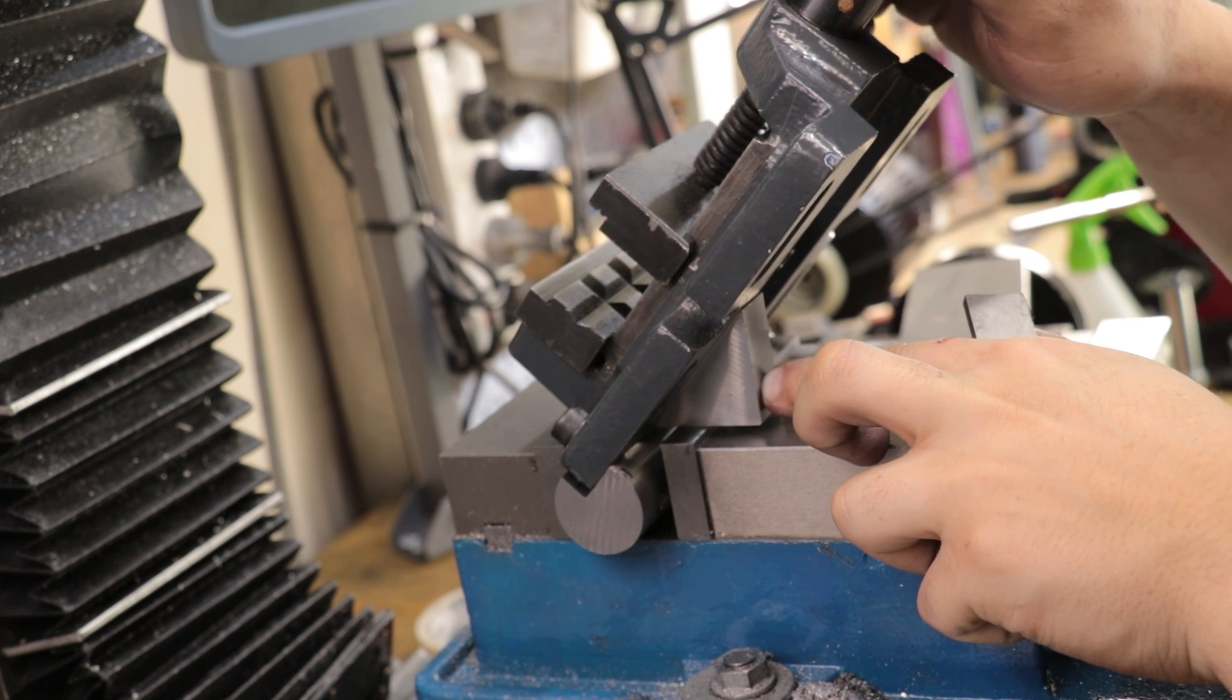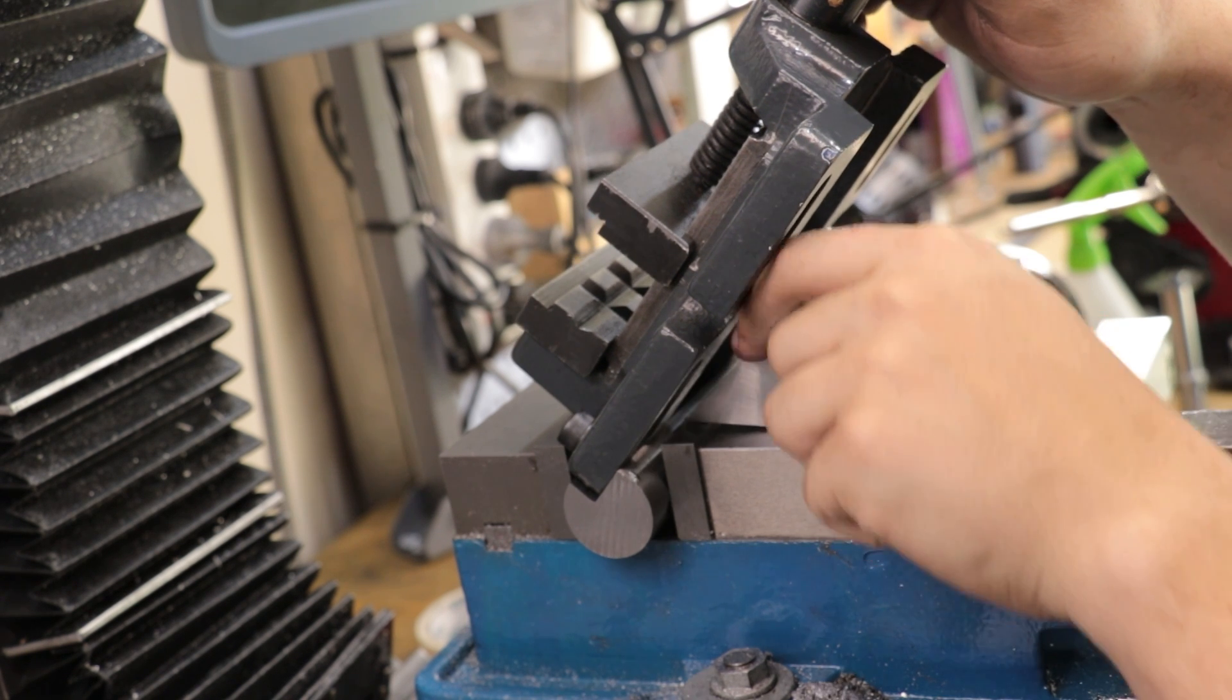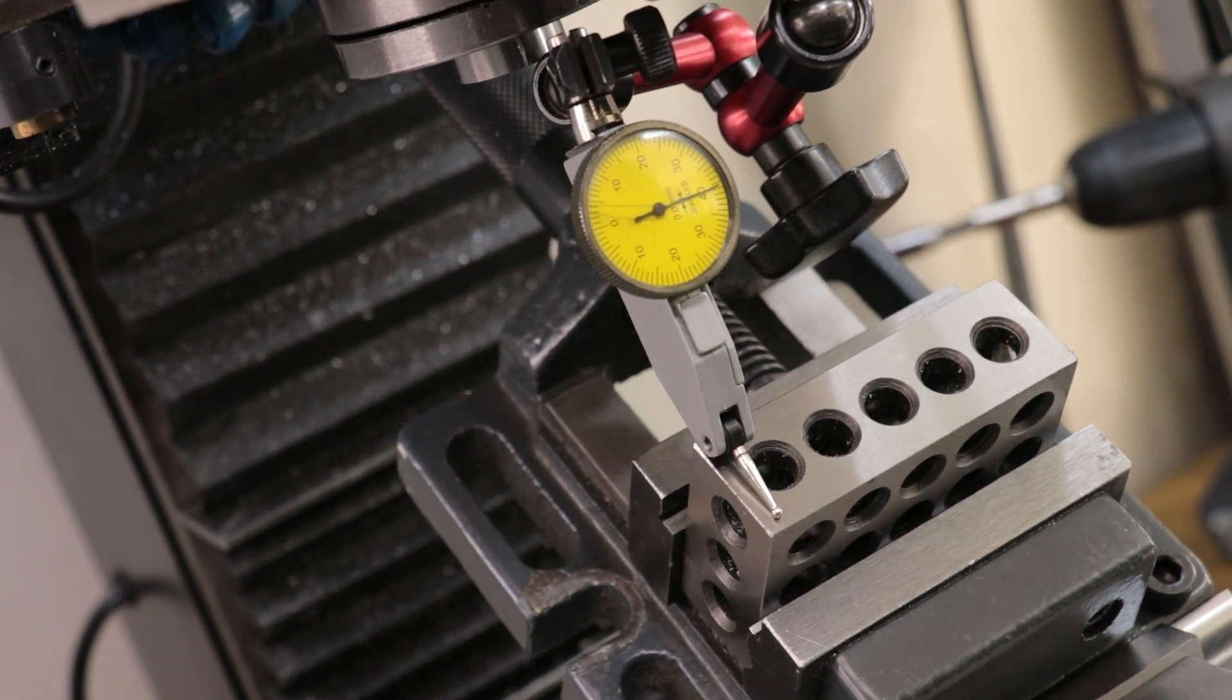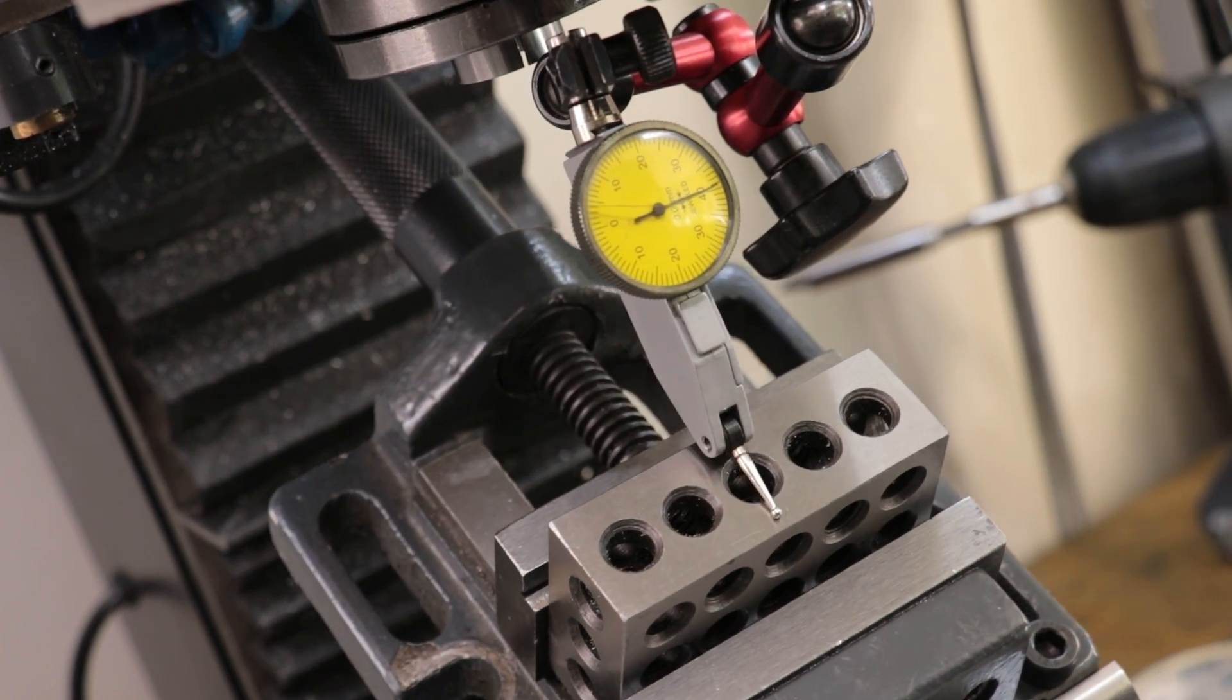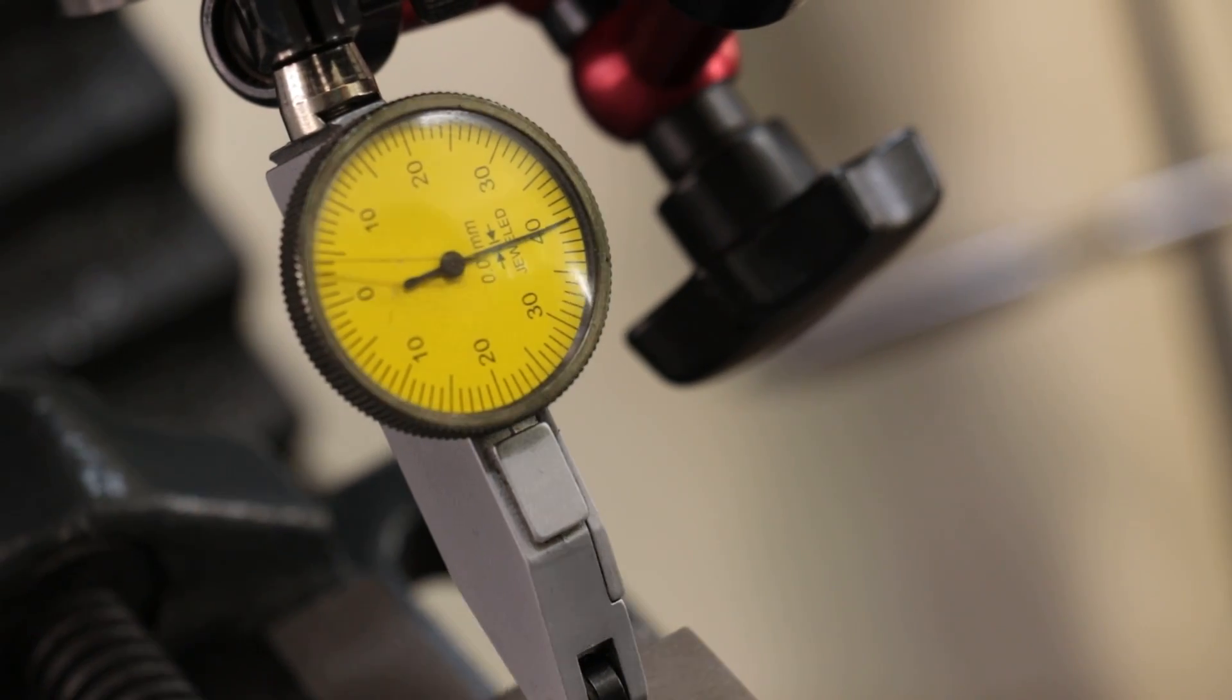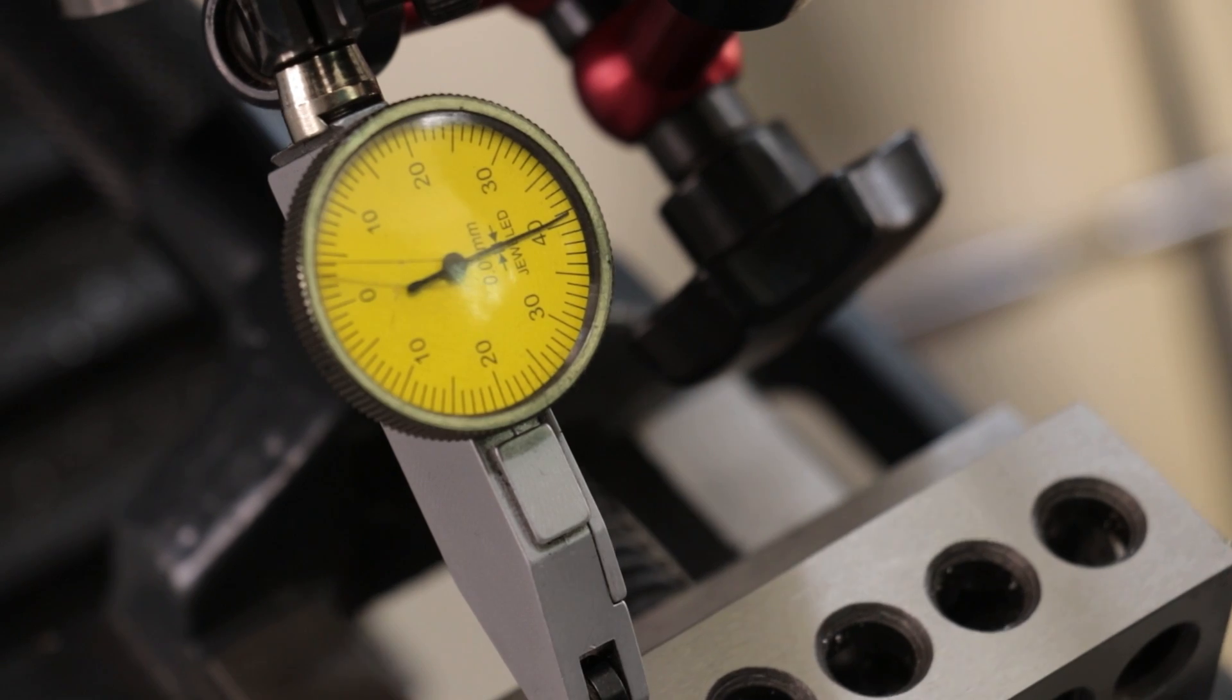And of course, you can use angle blocks or trigonometry to set up a really precise angle. And that's good enough to within 0.01mm across the length of the vise, which is definitely good enough for what I need.